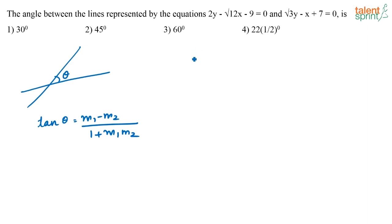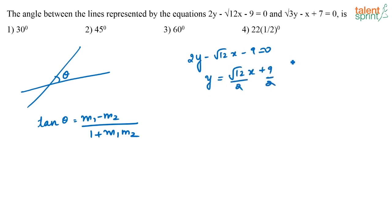We have 2y minus root 12x minus 9 equals 0, or y equals root 12x plus 9 divided by 2. The slope of this line, m1, equals root 12 by 2, which is root of 4 into 3 by 2, equal to root 3. The 2 and the 2 that comes out of the root cancel, giving root 3 as the slope of the first line.